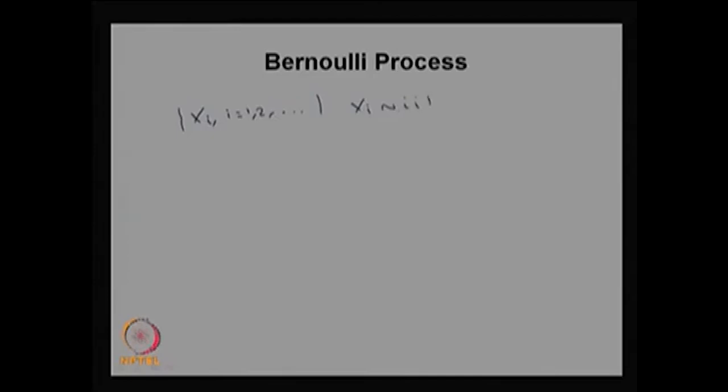What is a Bernoulli process? A Bernoulli process can be created by a sequence of random variables. Suppose you consider random variables X_i where i takes values 1, 2, and so on. This is a collection of random variables where the X_i's are iid, and each comes from Bernoulli trials — that means each random variable is Bernoulli distributed with parameter p.